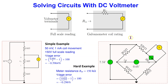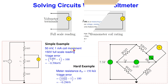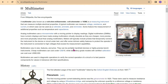Hello everyone. In this video we will look at how to expertly solve circuits with a DC voltmeter. We will see how to design the voltmeter given a desired full-scale reading. We will also see how to work out the effective resistance of the voltmeter and use it to calculate the percentage error in the measured voltage.